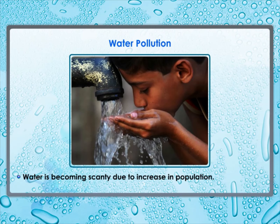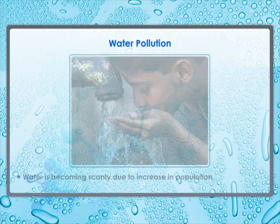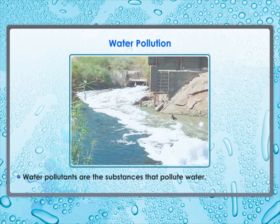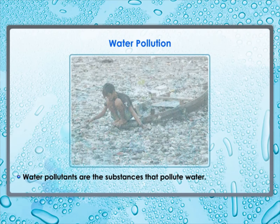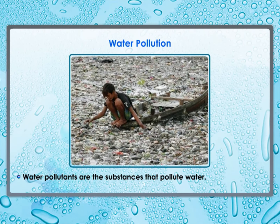Water is becoming scarce due to the increase in population, industries, and agricultural activities. When harmful substances such as sewage, toxic chemicals, and silt get mixed with water, the water becomes polluted. The substances that pollute water are called water pollutants.